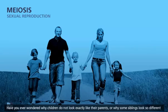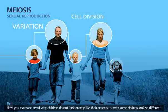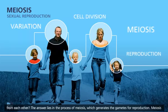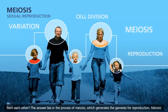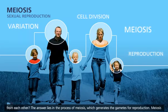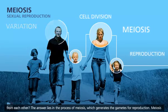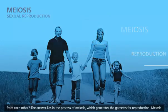Have you ever wondered why children do not look exactly like their parents, or why some siblings look so different from each other? The answer lies in the process of meiosis, which generates the gametes for reproduction.